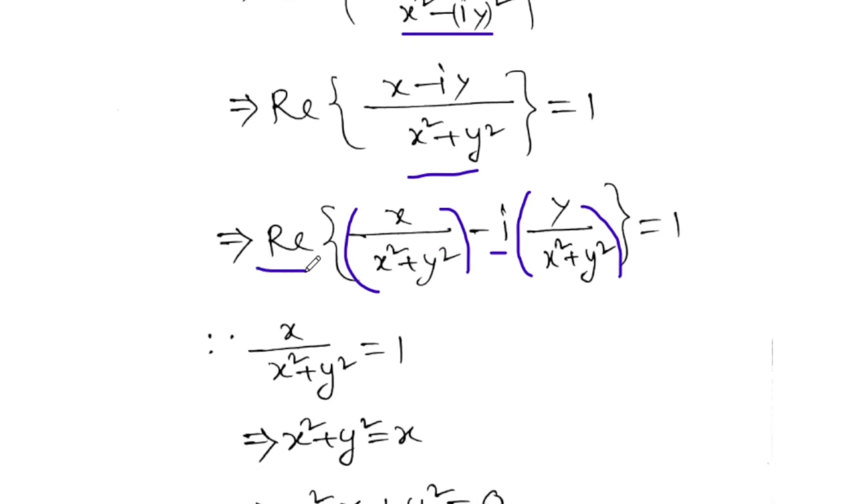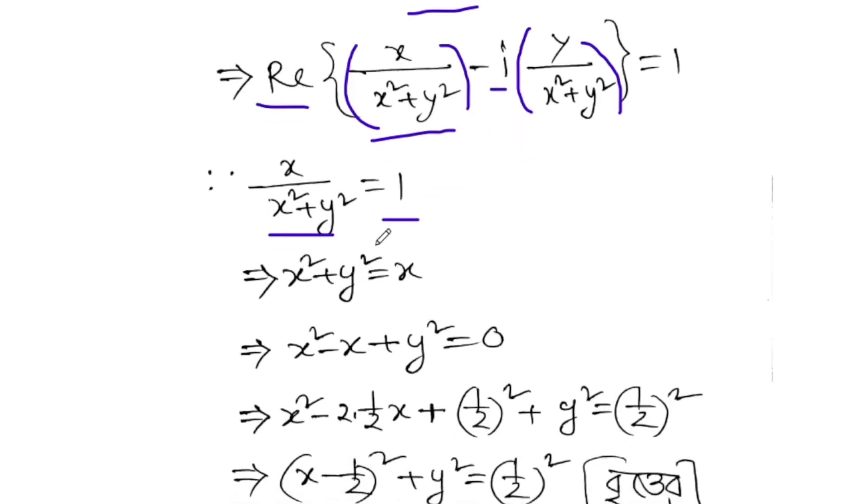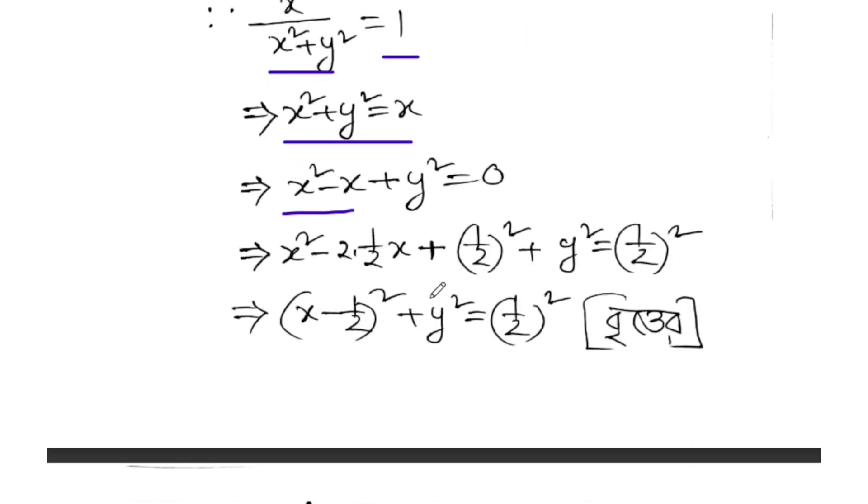The real part is X over (X squared plus Y squared), which equals one. So X over (X squared plus Y squared) equals one. The real part equals one, so X squared plus Y squared equals X. I can rearrange this to X squared minus X.